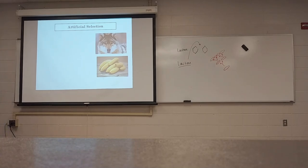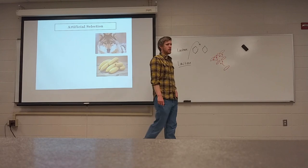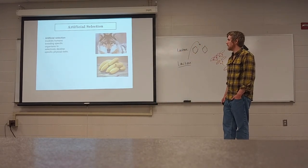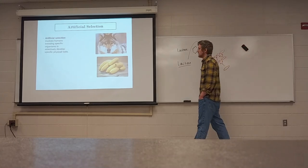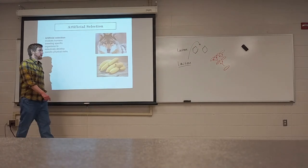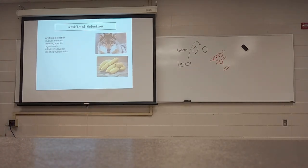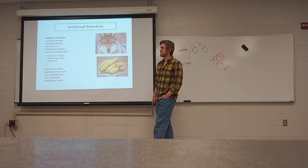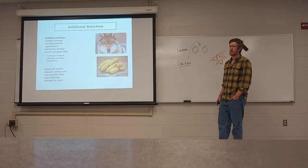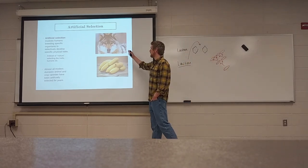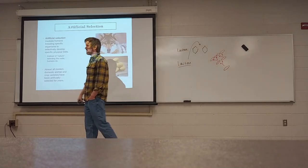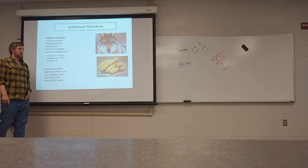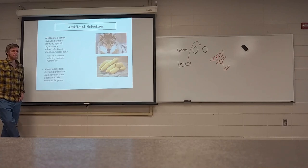Now, artificial selection. Natural selection means organisms most fit for their natural environment experience the greatest reproductive success. Artificial selection involves humans taking the place of nature — we breed both animals and plants for specific traits. Instead of nature selecting the traits, humans do. Most all of what we eat, our livestock, and our pets have been artificially selected for a very long time. What we have here is a wolf and our domestic version of the banana.